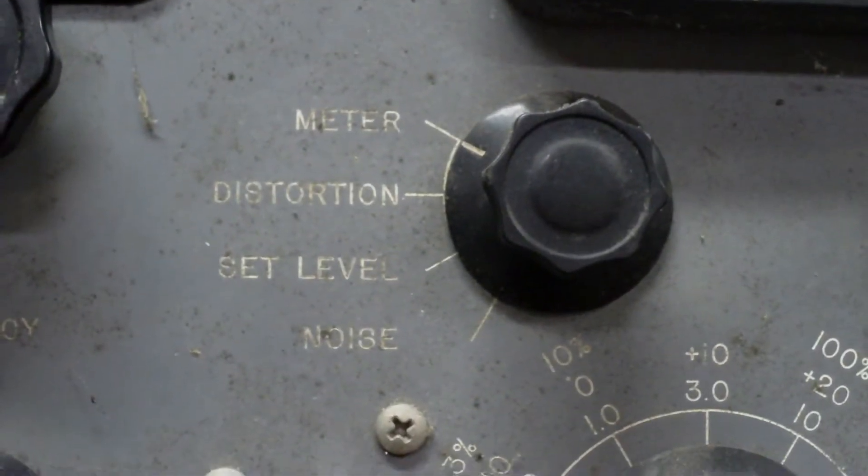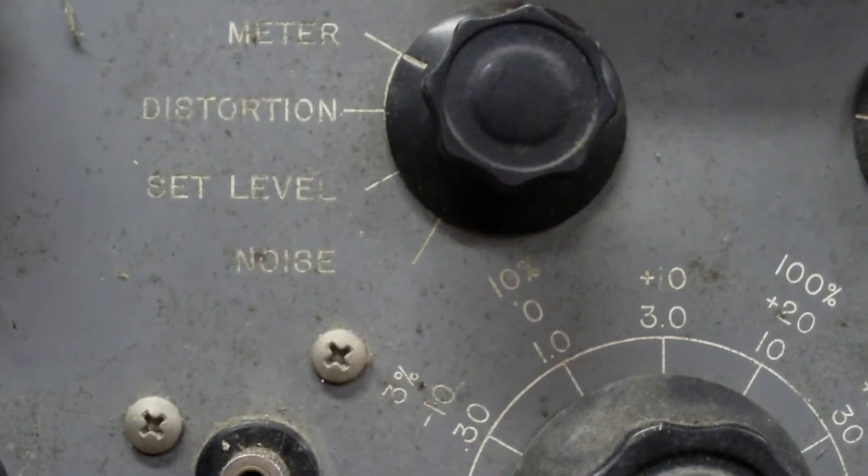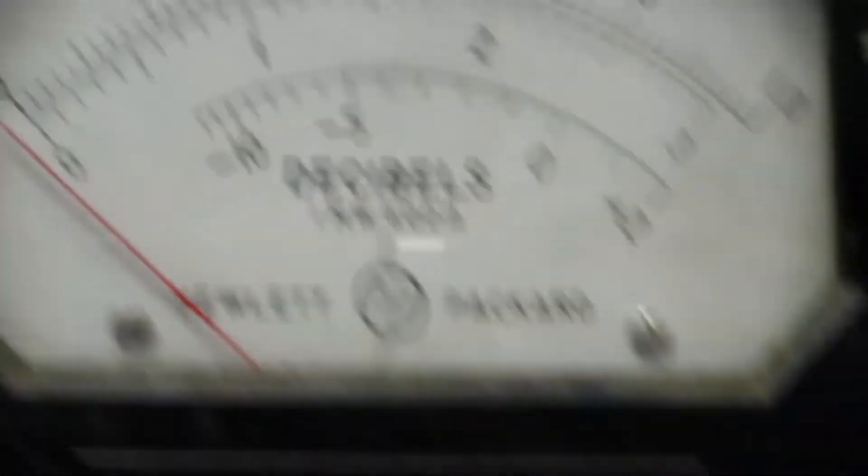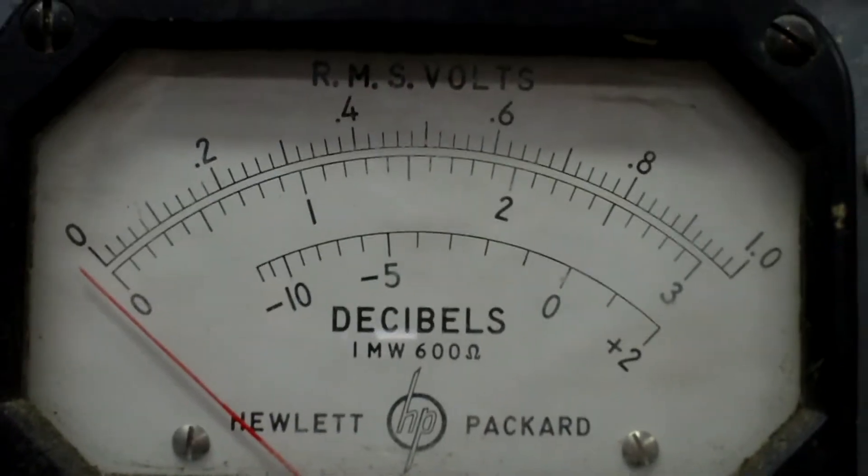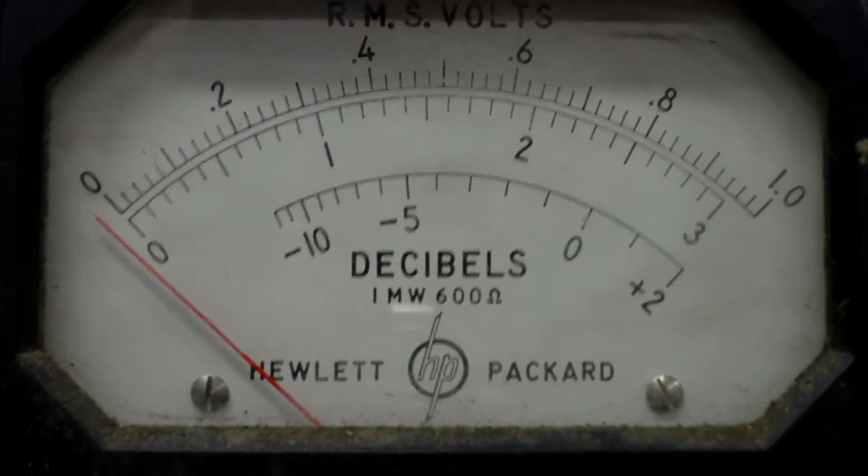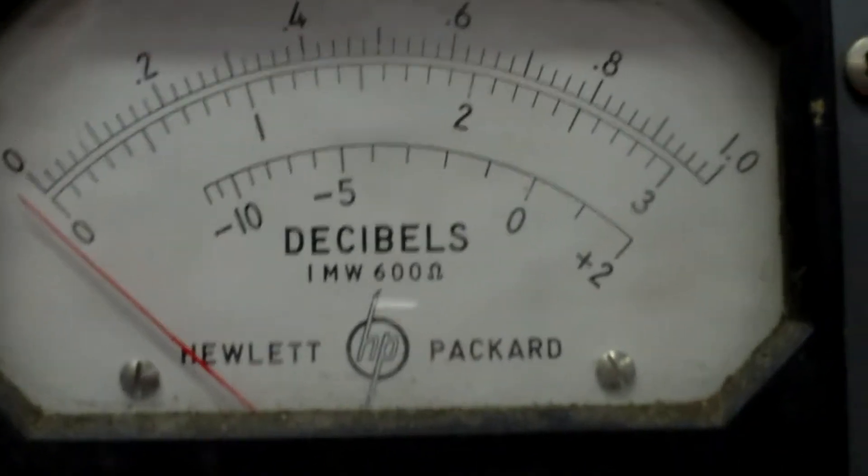Balance meter, distortion set level and noise. That's really a lot right here. Here's what I like: I like these old gauges, always call them VU meters. I'm used to seeing them with mixers and stuff. You don't see them too often nowadays.